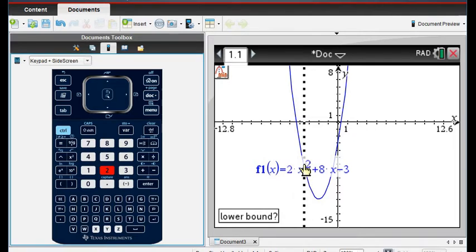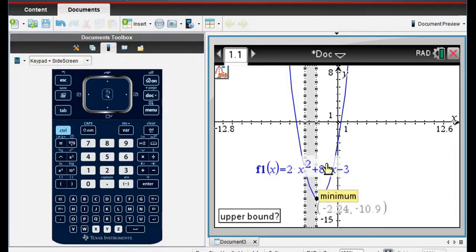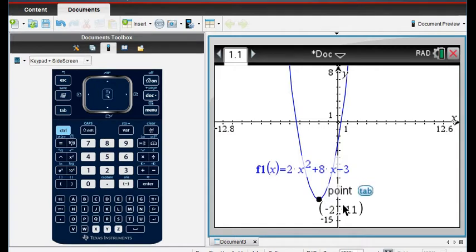and it's going to ask you for the lower bound. The lower bound is something to the left of your turning point. So I would go here, and then I would go to the right, and it automatically finds the minimum at negative 2, negative 11.